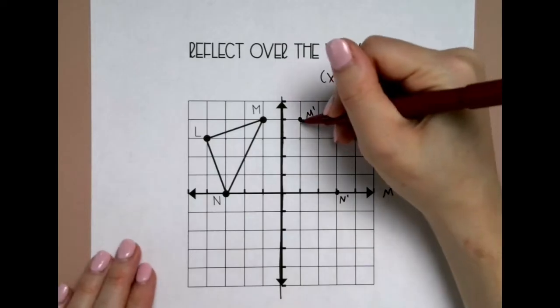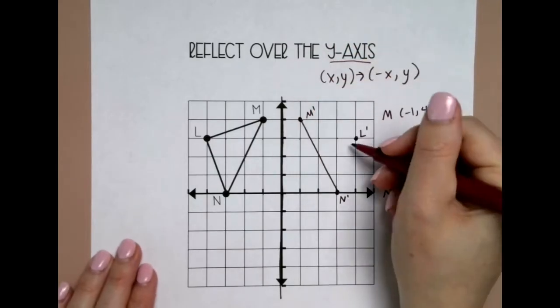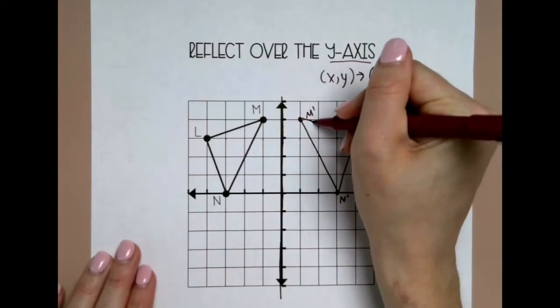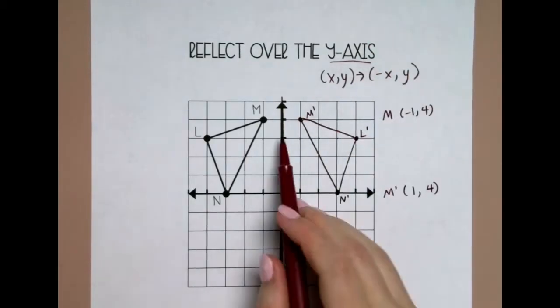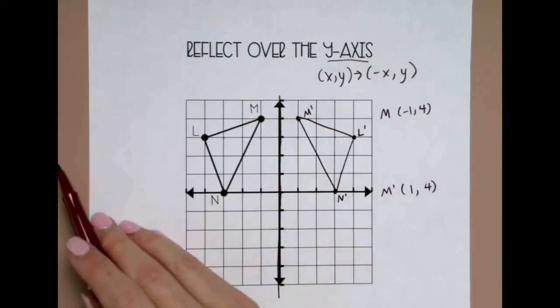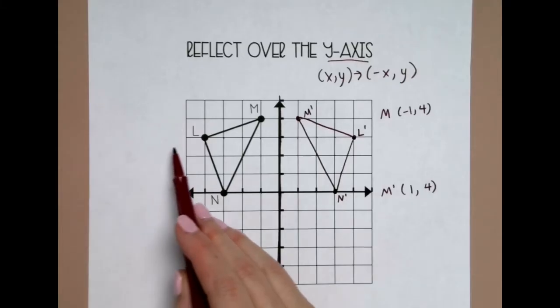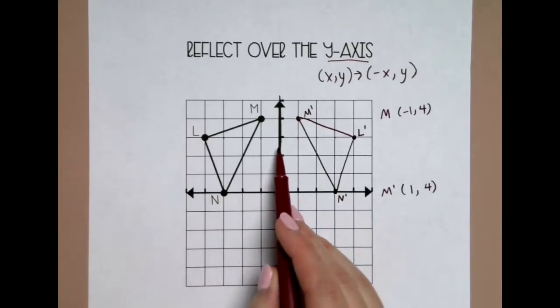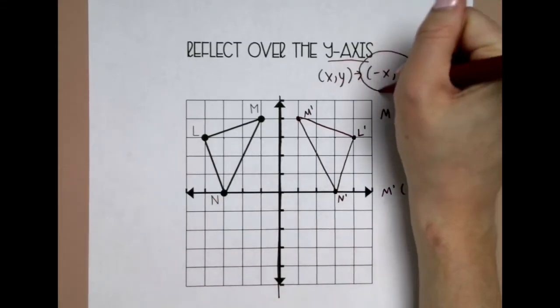Usually counting is easier for students, but let's say that you have a shape that's pretty far from your line of reflection, somewhere way out here. It's going to take a while for you to count all the way to the line. That's when I would use the coordinate rule.